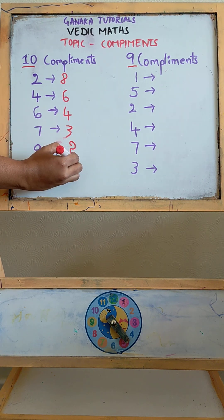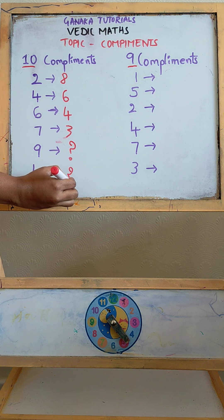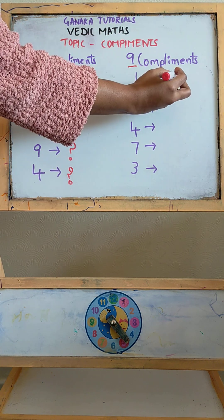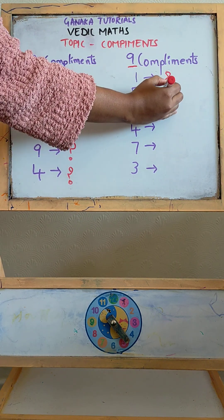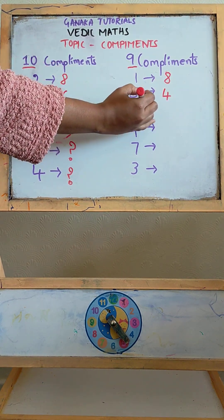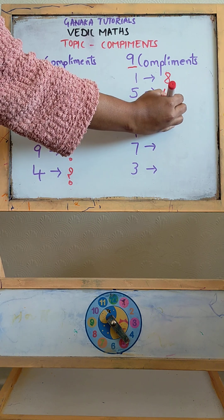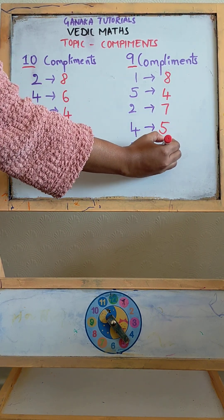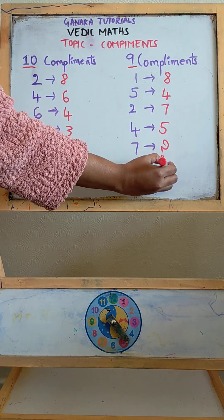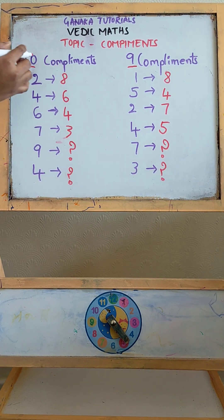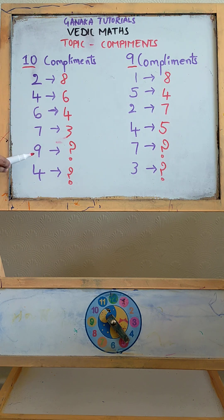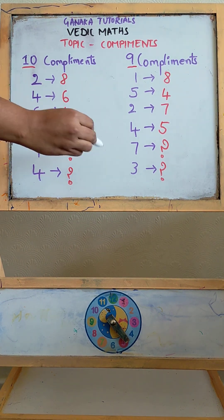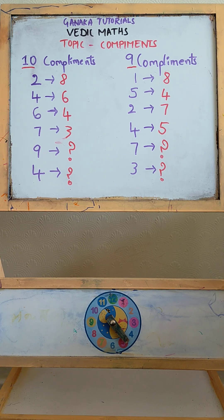Can you find the complements for these two? And for base 9: 9 minus 1 is 8, 9 minus 5 is 4, 9 minus 2 is 7, 9 minus 4 is 5. For both base 10 and base 9, find the complements for these four and let me know your answers in the comments.